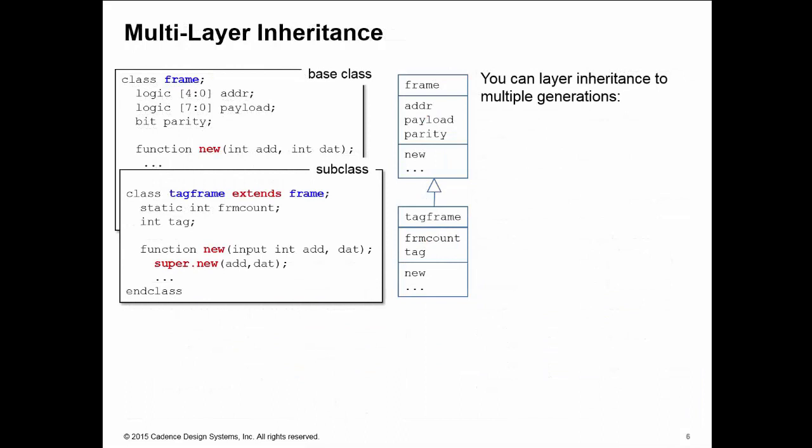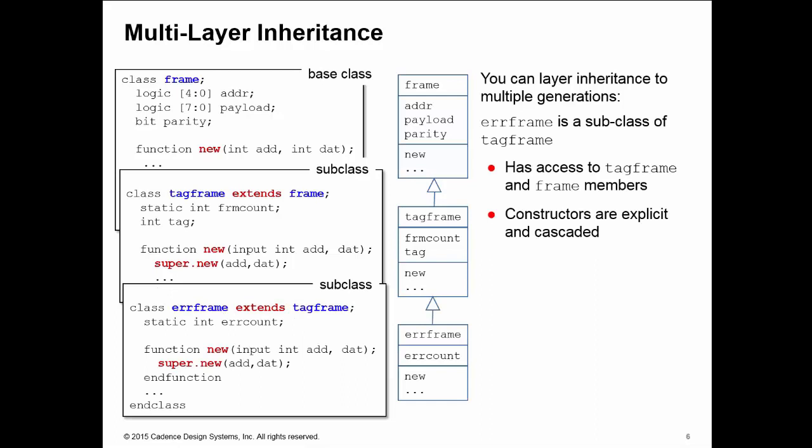You can layer inheritance to as many generations as you can deal with. Here I have my frame class, I have tag frame which extends frame, and I can declare a new class error frame which extends from tag frame. This inherits all the members of tag frame and all the members of the frame class. The frame class is my base class at the top of the hierarchy stack that doesn't extend anything else, but tag frame is a subclass of frame and error frame is a subclass of tag frame.